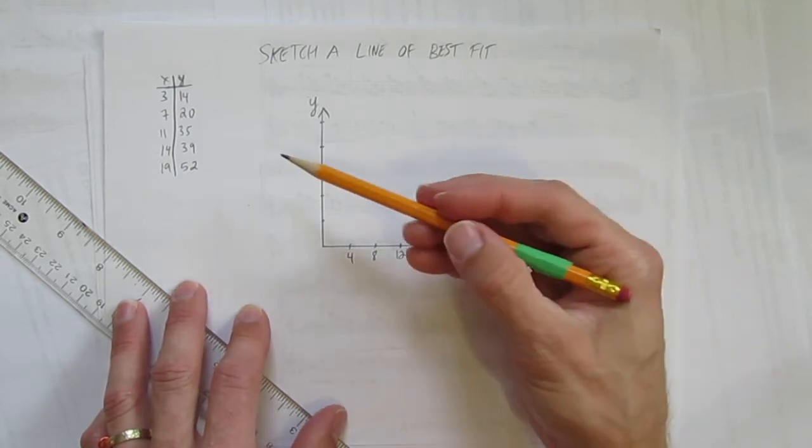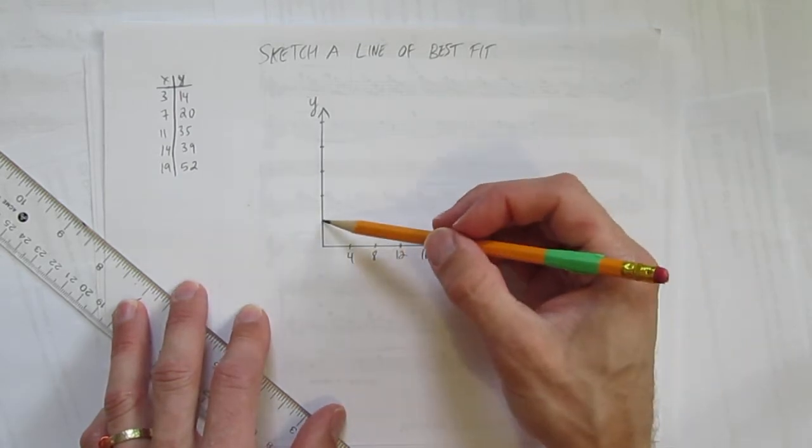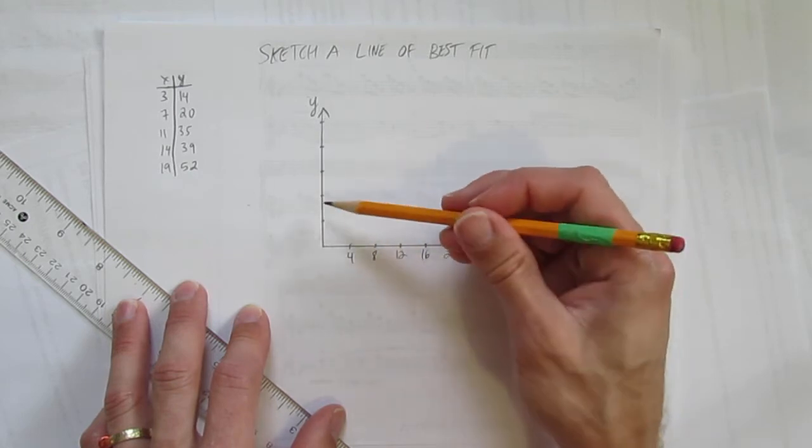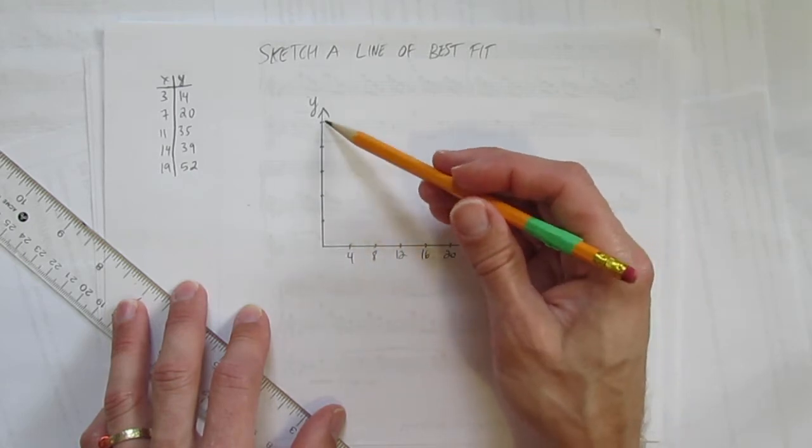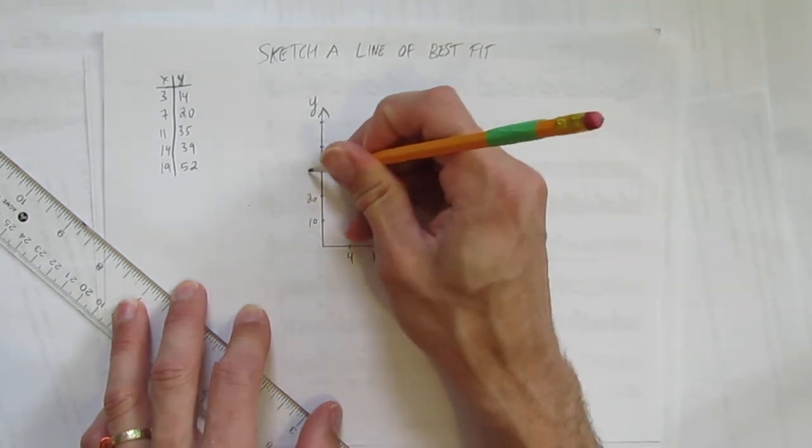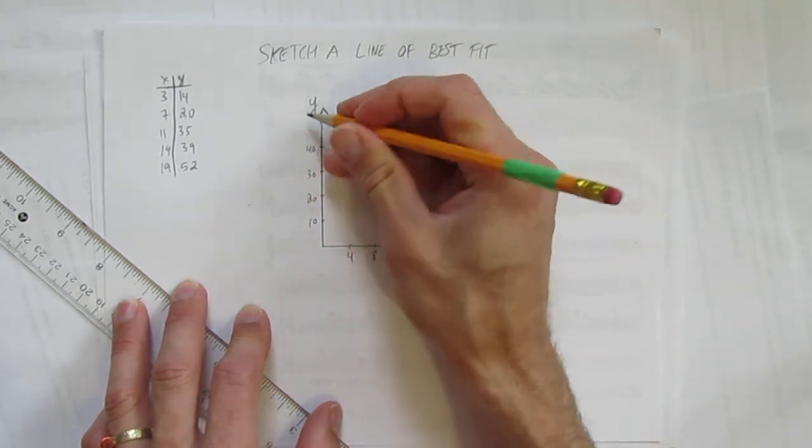And then the Y's go up to 52, so 10, 15, 20, no dice, that's not going to work. So 10, 20, 30, 40, 50, I'll just make it 10, 20, 30, 40, 50.